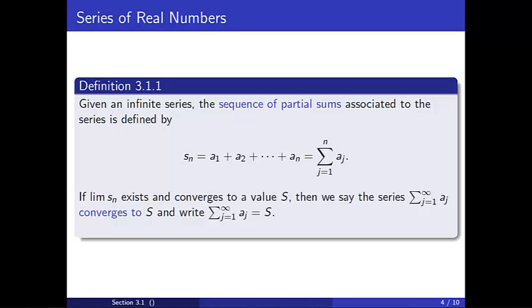then we say the series converges to S and write sum of a_j from j equals 1 to infinity equals S. As with sequences, if the series does not converge, then we say it diverges.